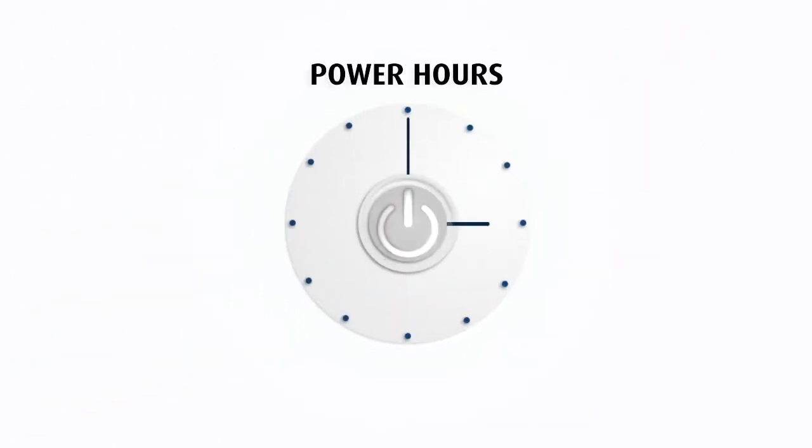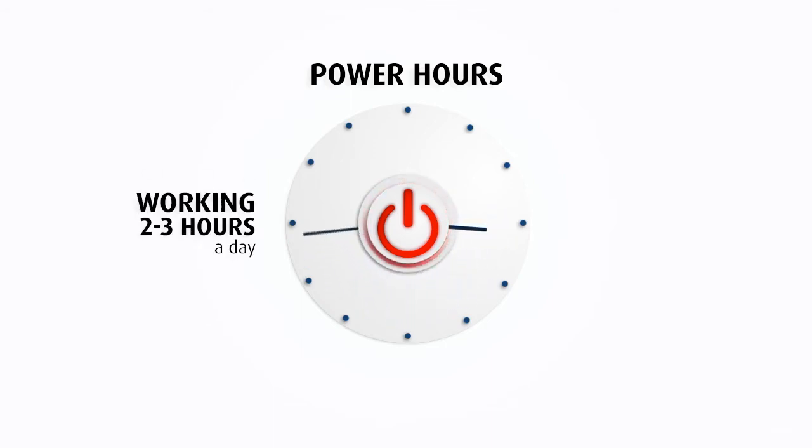She calls them power hours. By making sure you spend your time only on the most productive activities. Her formula for success requires working two to three hours a day, five days a week, setting priorities for a part-time plan. Here's the formula.